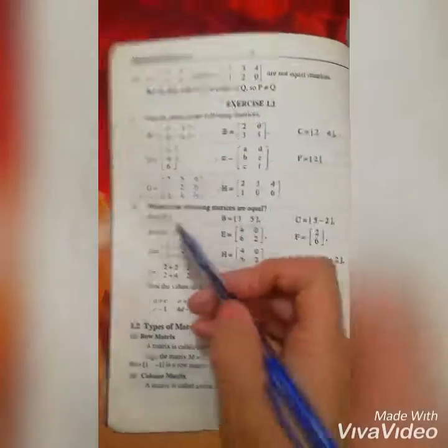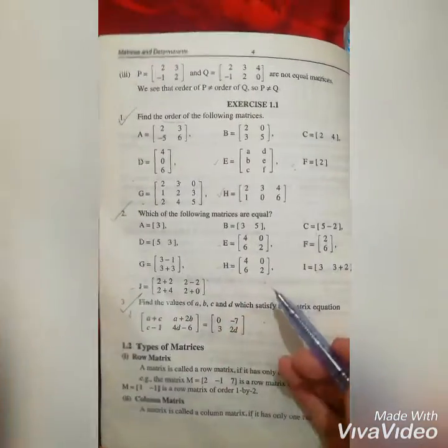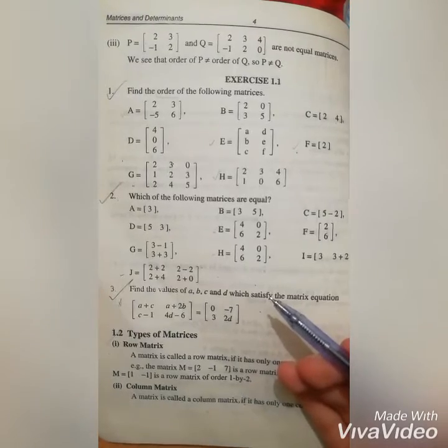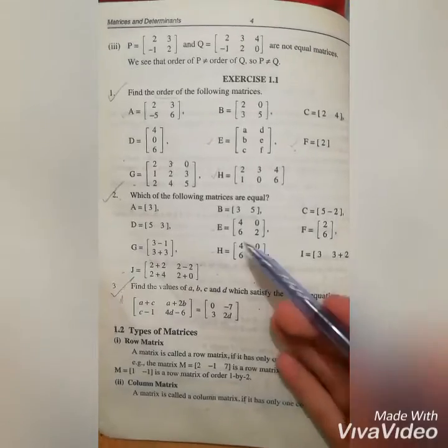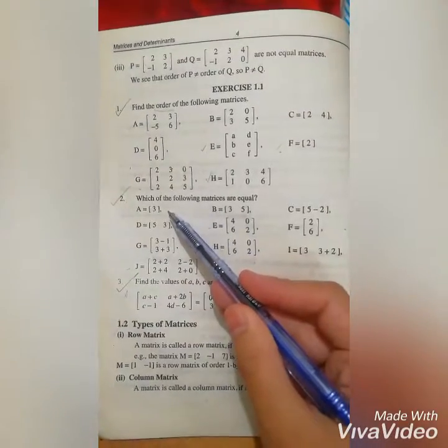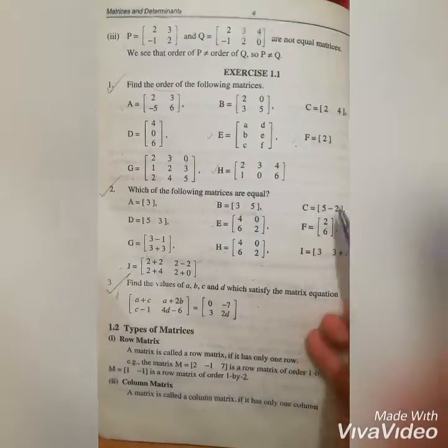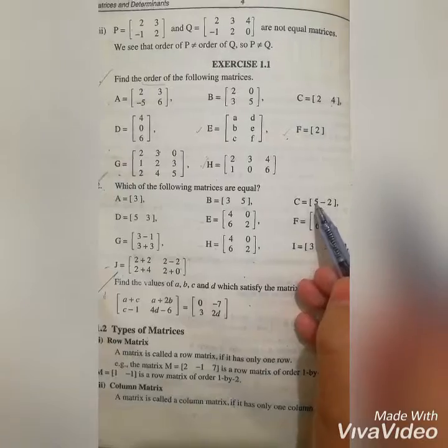Now we have the second question: which of the following matrices are equal? We have to see which matrices have all entries matching each other. First, we have A-matrix - it is 3. We haven't seen this anywhere, but look at C. It is 3 minus 2.